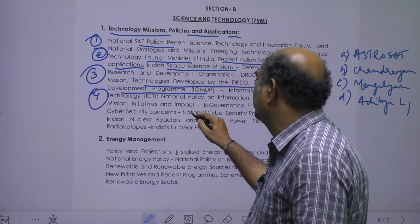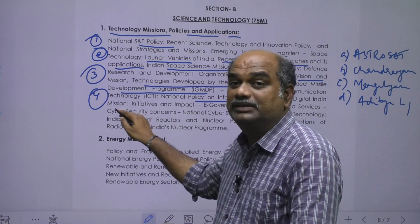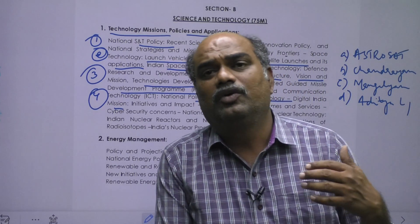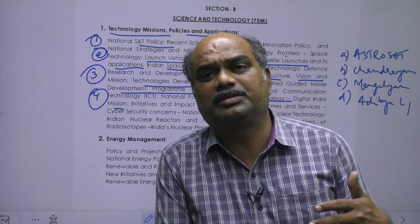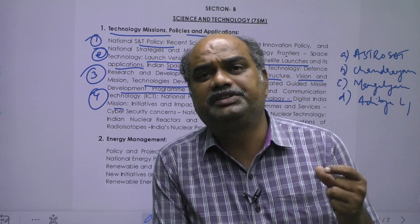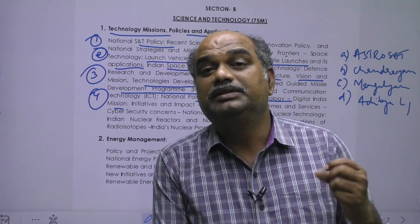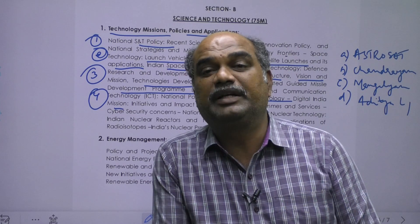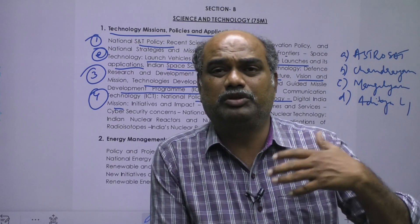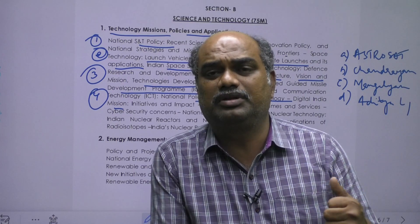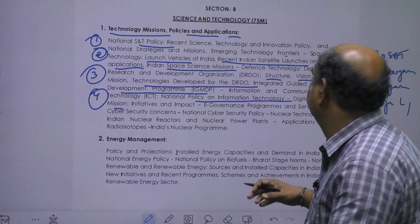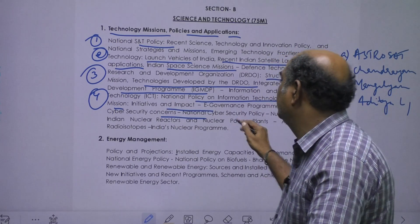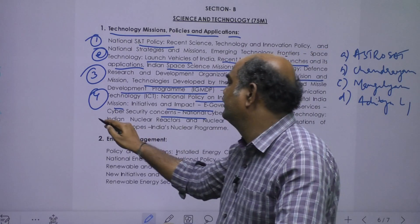ICT — Information and Communication Technology — covers national policy on information technology and the digital mission, which is very important. Topics include 4th and 5th generation mobile, GPS and GPRS differences, GPRS, LTE, VOLTE, and megapixel concepts, as well as 4th, 5th, and 6th generation mobile. Also covered are initiatives and impact, e-governance programs and services, and cyber security concerns.